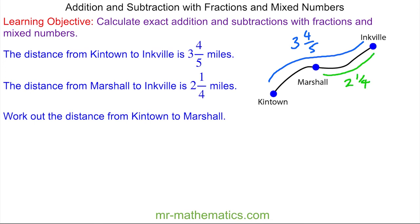So from Kintown to Marshall will be the difference between this fraction and this fraction. So three and four-fifths minus two and one-quarter.